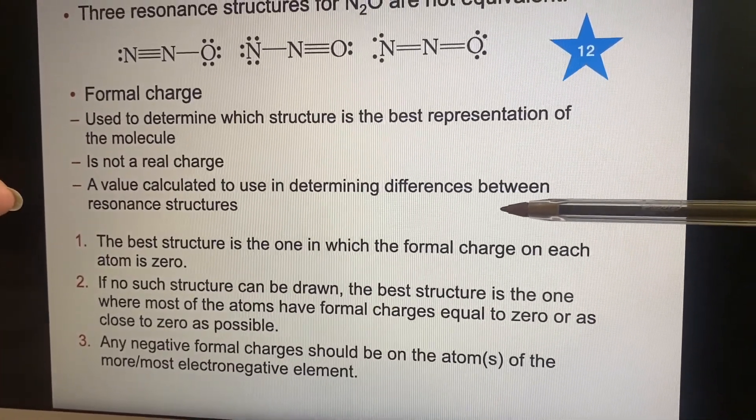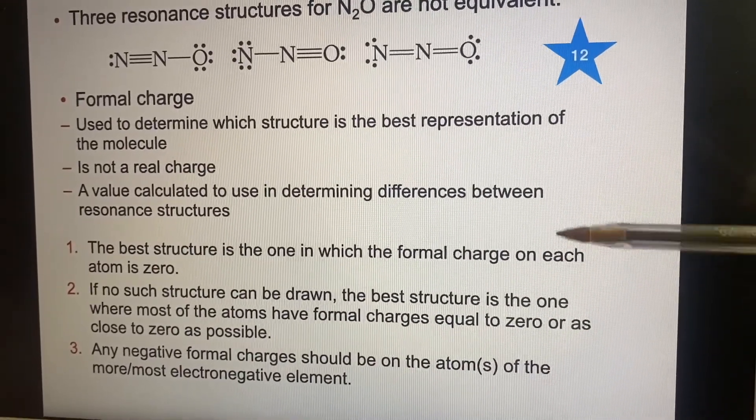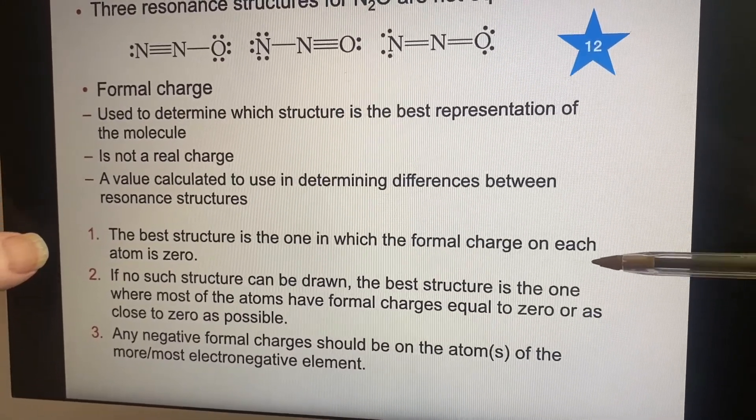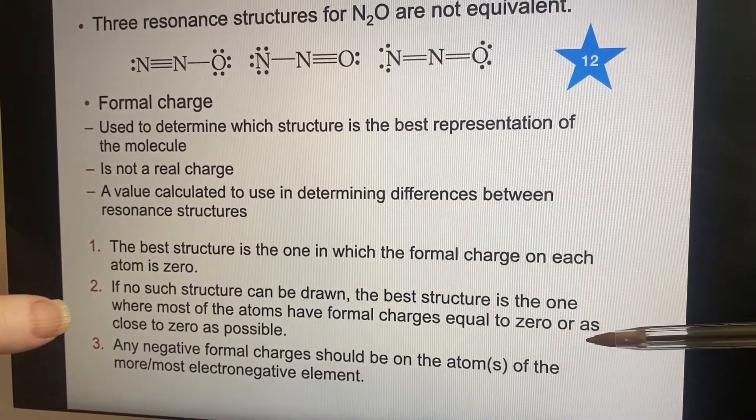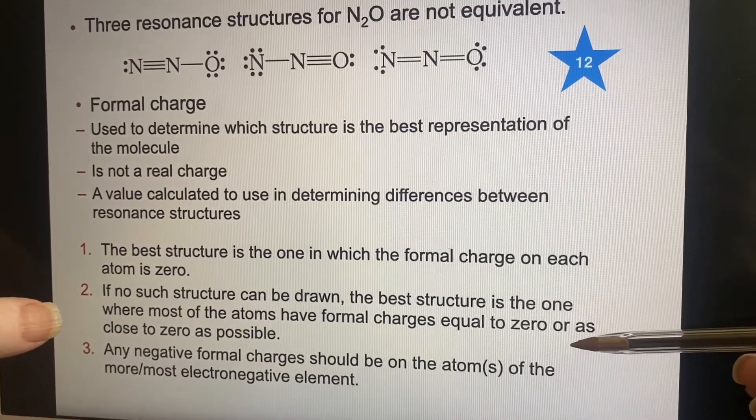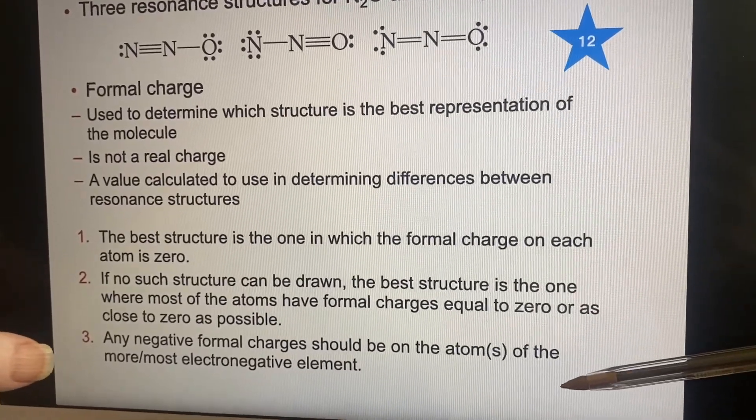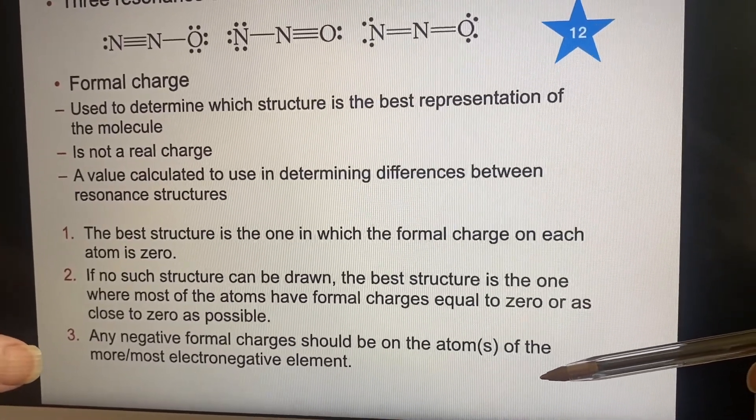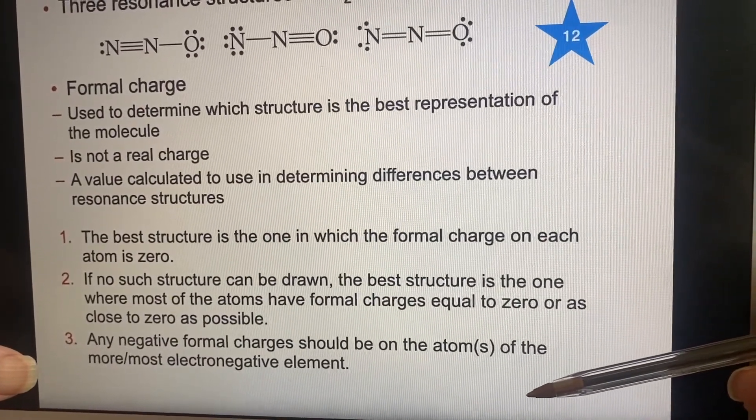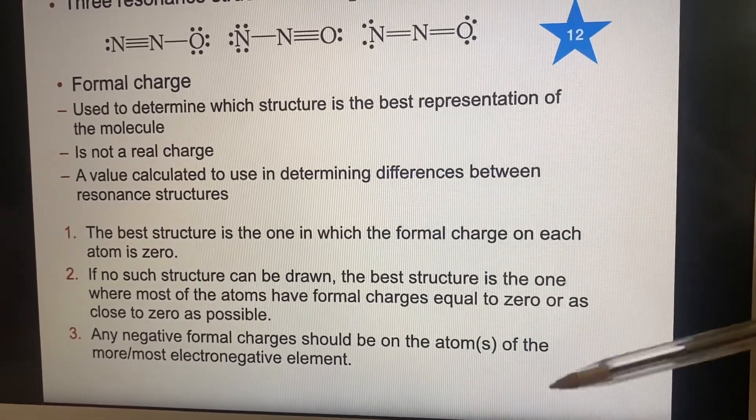Like I said, we use it to figure out which structure is the best, but it is not a real charge. It is just used to determine the difference between the resonant structures we can develop. And if we can find one where the formal charge on every atom is at zero, well, huzzah, that is exactly what we want. But a lot of times that isn't possible. And the best one's the one where we have the lowest formal charges closest to zero. And if we have any negative ones, they should be on the atoms of the more electronegative element, that is very important.